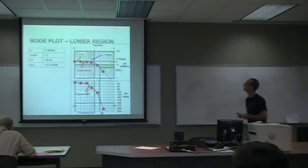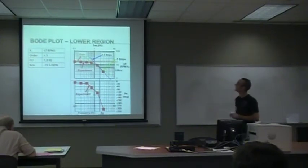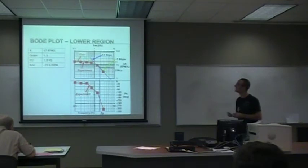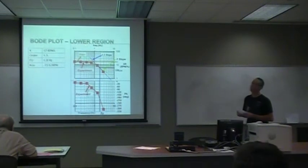This is the Bode plot for the lower region. It has a gain of 17 RPM per percent, an order of 1.5, an ultimate frequency of 1.8 hertz, and an ultimate gain of the controller of 1.5 percent.